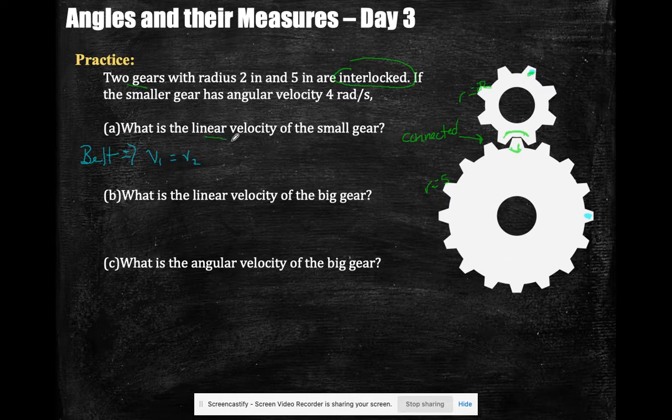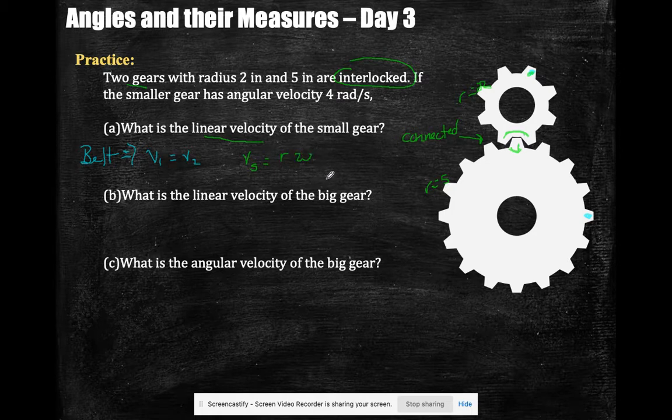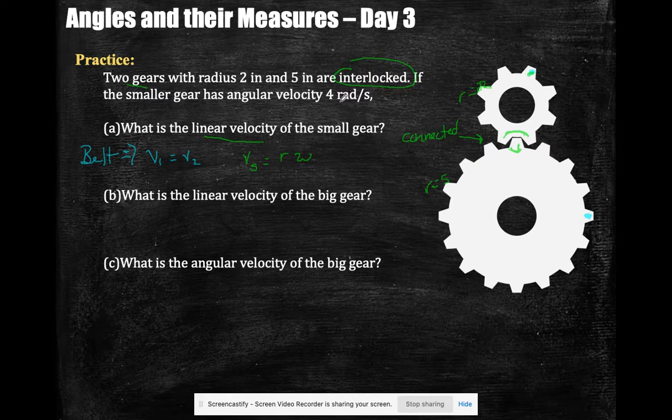So they're asking me for the linear velocity of the small gear. Velocity of the small gear is the radius times omega, where omega is in radians per time. But they gave me radians per time, didn't they?